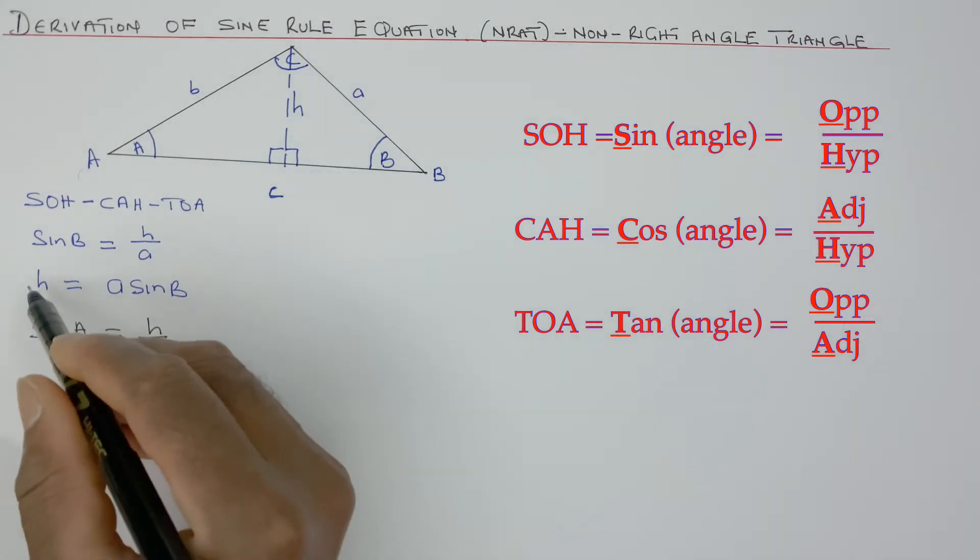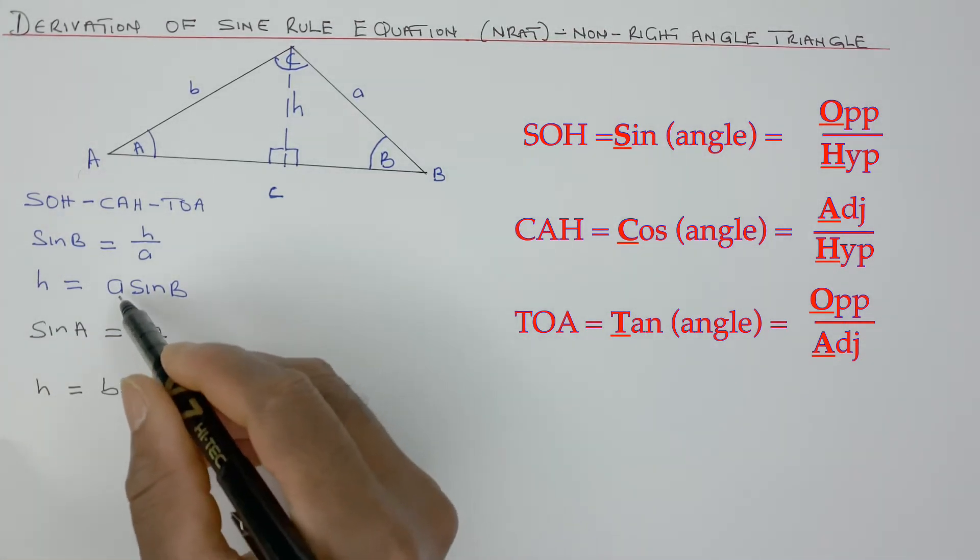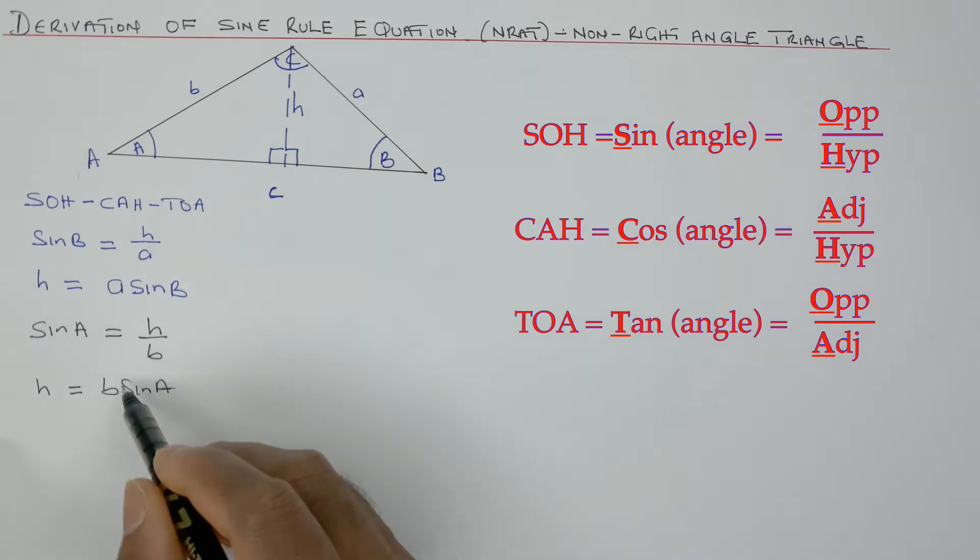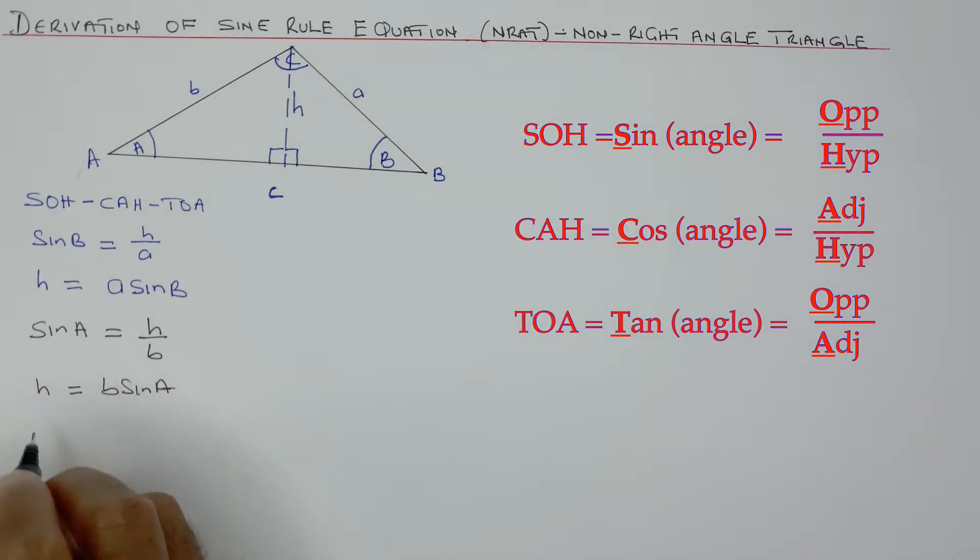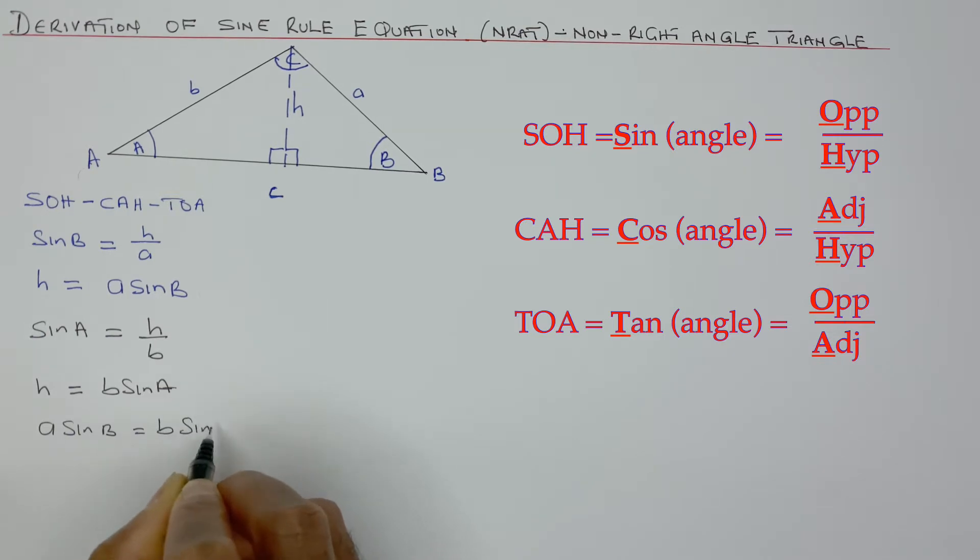Now, I can see that H and H are both equal. Therefore, A sine of B will be equal to B sine of A.